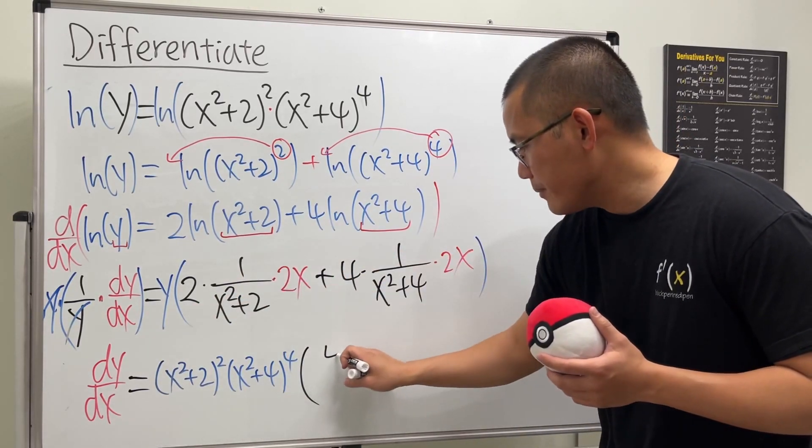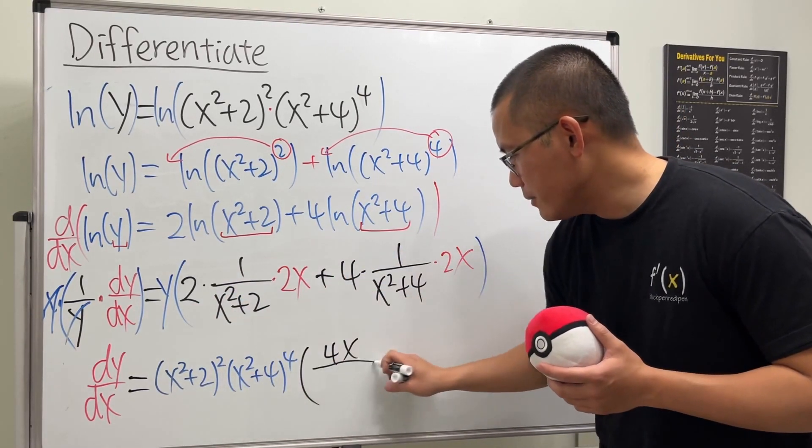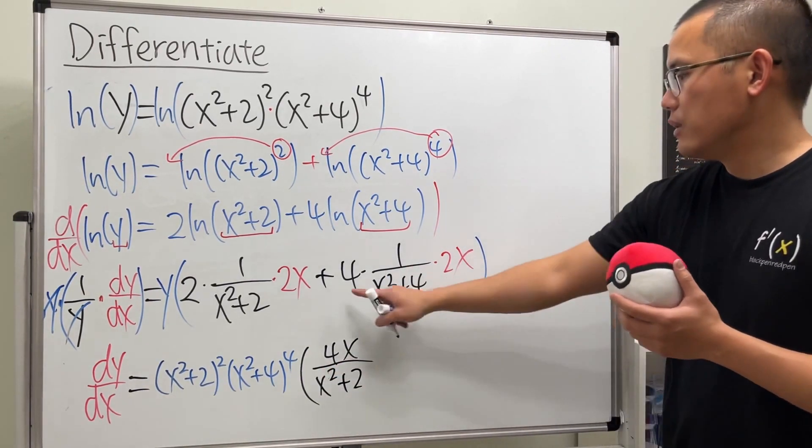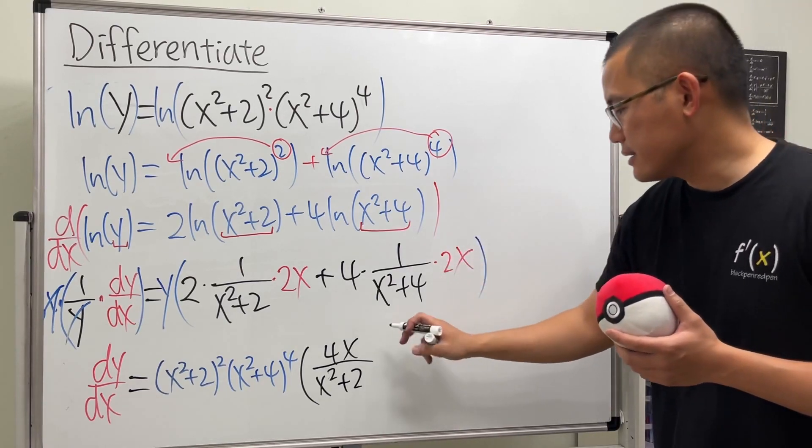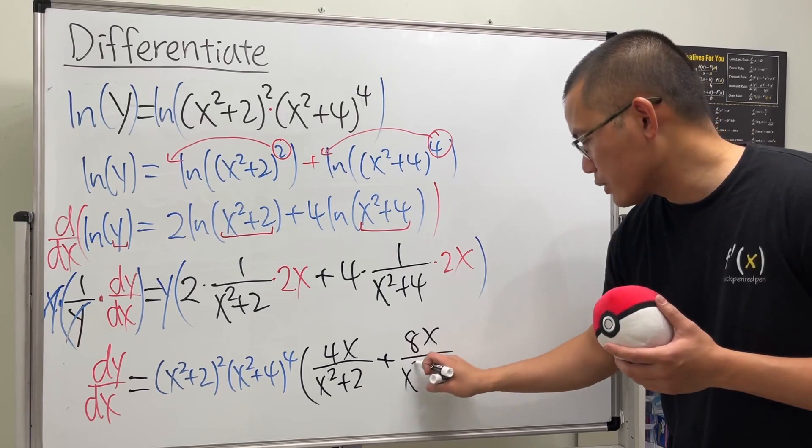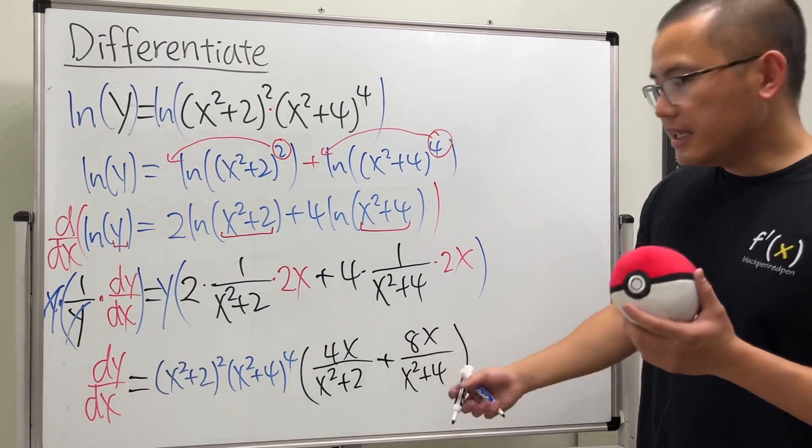So for this part just work that out - we get 4x on the top over (x² + 2) for the bottom. And then for this, 4 times 2x which is 8x, and we'll just add 8x over (x² + 4), and that's it.